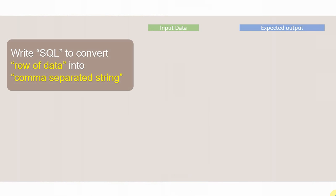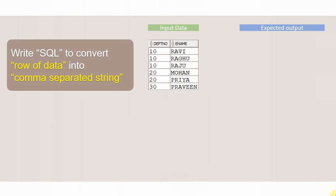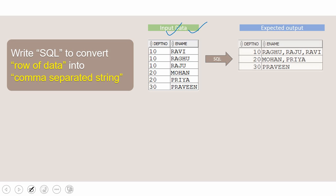Let us take one example to convert a row of data into a comma-separated string. The table I have taken contains department-wise employees. We have two columns: department number and ename. There are few people working in department 10, few employees in department 20, and few employees in department 30. We are going to write a SQL to convert this information into department-wise comma-separated employees.